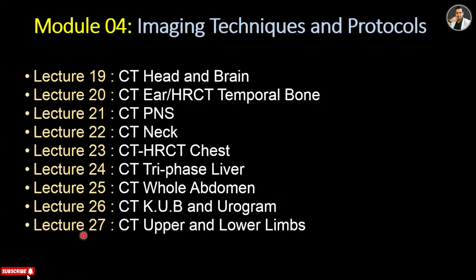Lecture 27 is CT upper and lower limbs — we will cover peripheral imaging of the upper and lower limbs. These are nine tutorials we will cover in this module on imaging technique and protocols. Hope you will watch all the tutorials.